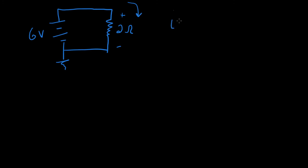So we want I and that's equal to the voltage over the resistance. That's six volts over two ohms. And that's going to give us three amps.